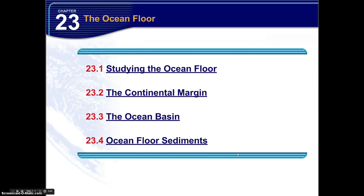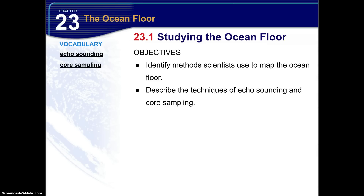Chapter 23, the ocean floor. Section 23.1 is studying the ocean floor. Number two is the continental margin. Number three is the ocean basin, and number four is the ocean floor sediments. Now we're going to start off with 23.1, studying the ocean floor. We have two vocabulary terms: echo sounding and core sampling. Make sure you have those in your lab notebook before we begin with the definitions.